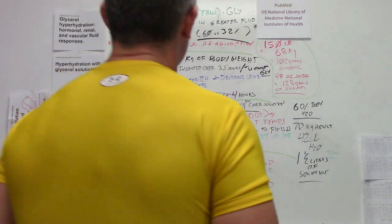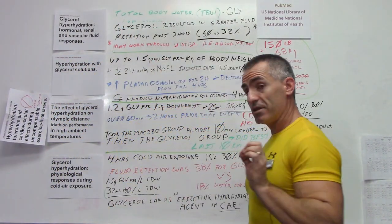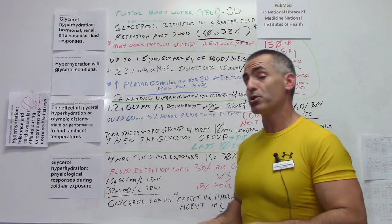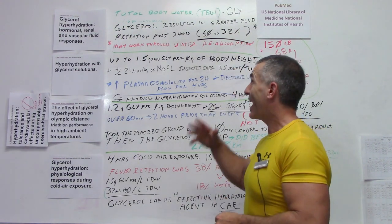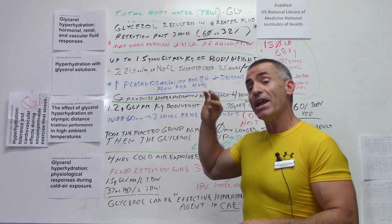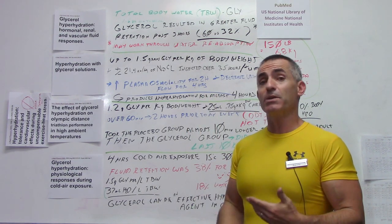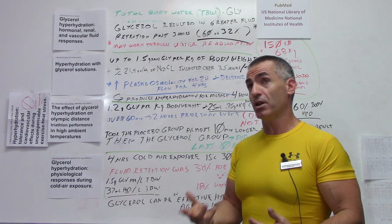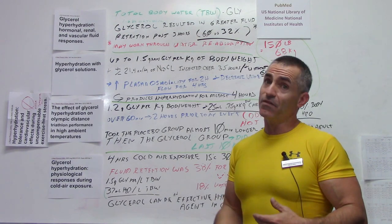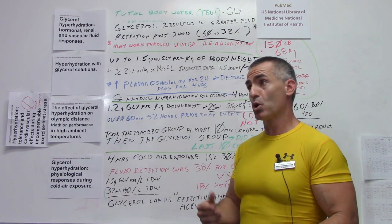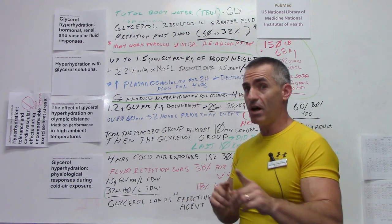Glycerol and hyperhydration. What we're going to go through today is basically how researchers recommend, or at least how much glycerol they utilize in their studies to get the desired results. It's usually going to range between 1.2 grams per kilogram of body weight or 1.5 grams of glycerol per total body water volume.